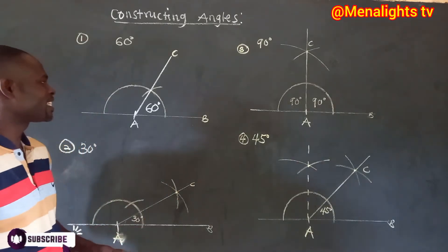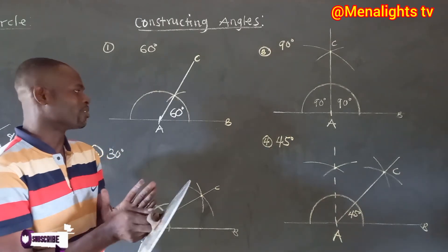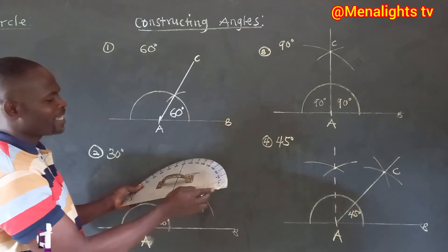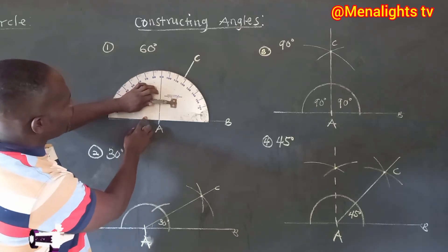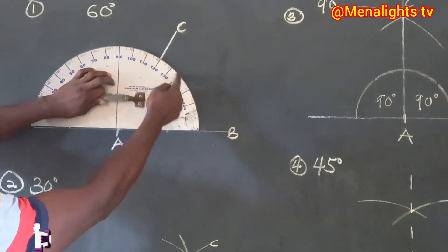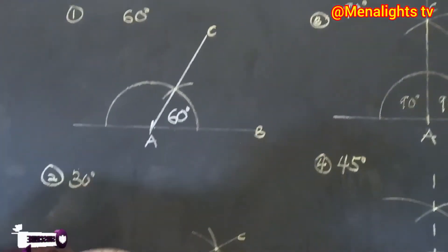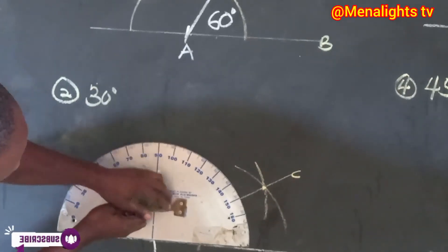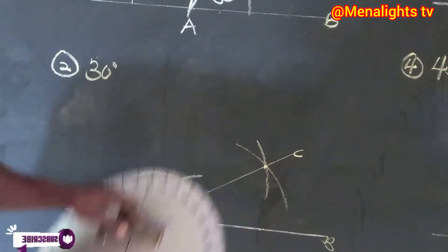The first one is 60 degrees, using the protractor — the instrument we use to measure angles. The center line must be at the center and the baseline on the line. As you can see, from zero, 10, 20, 30, 40, 50, 60 — we have it at exactly 60 degrees. Now let's come to 30 degrees — as you can see, we have our 30, from zero to 30 degrees.